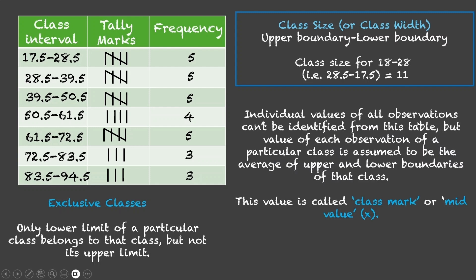Individual values of all observations cannot be identified from this table. But value of each observation of a particular class is assumed to be the average of upper and lower boundaries of that class and this is called class mark or mid-value. This is used, for example, when we start to learn how to calculate the average or mean, we'll be requiring this class mark. It is calculated like this, it's the average of lower boundary and upper boundary. So, the class mark for this class will be 17.5 plus 28.5 divided by 2 which is 23. Similarly, we find out the class marks for all the class intervals and put it in a column and then we go on further on whatever measure of central tendency we have to calculate.